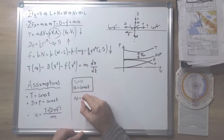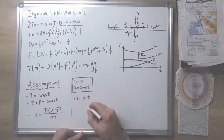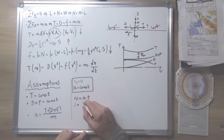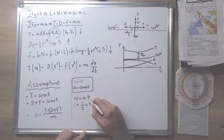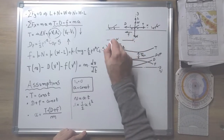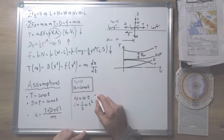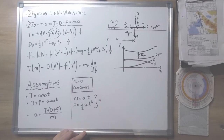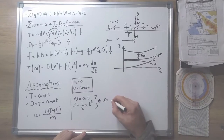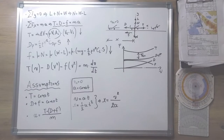The distance traveled by the aircraft is one half times acceleration times time squared. Combining these two equations, we have that the distance traveled by the airplane equals the final speed squared divided by double the acceleration the aircraft has.